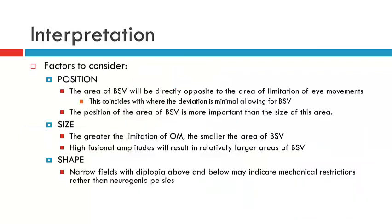How do we interpret the field of BSV? There are three things that we'll look at: position, size, and shape. In terms of position, the position can give us some indication of the likely affected muscle. Whilst we don't use the field of BSV for this purpose alone, it can be utilised to further support your theory or diagnosis of which is the affected muscle.